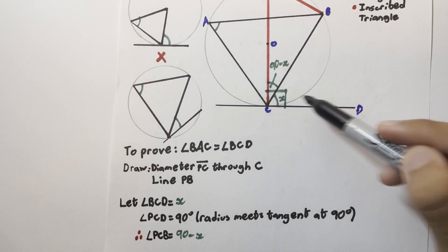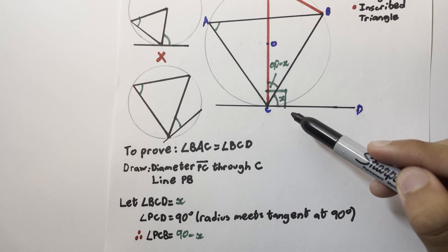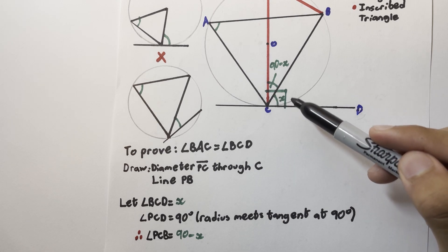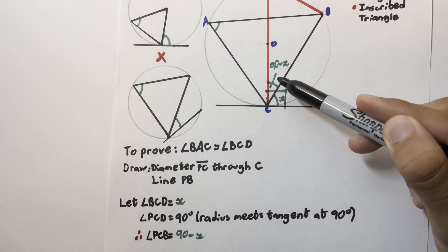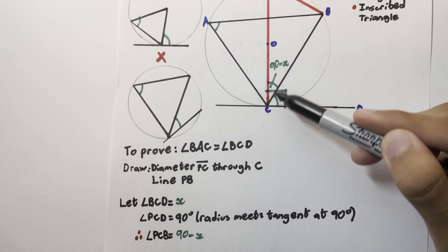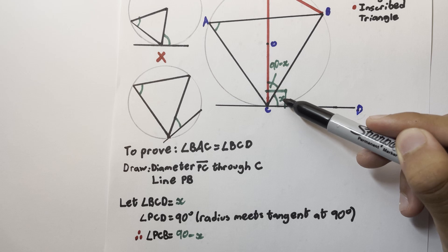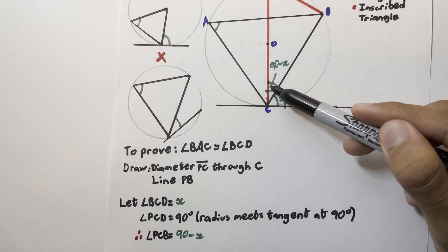This means that this angle PCD is a right angle of 90 degrees. From that we can deduce that angle PCB is 90 minus x, because angle PCB and BCD have to add up to 90. This is x, so this must be 90 minus x.